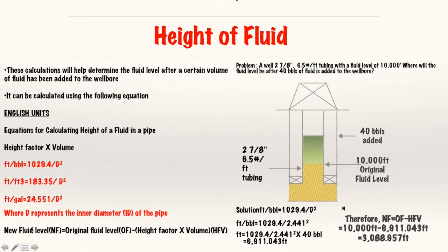So, the equation to, or the formula to take into consideration is new fluid level is equal to original fluid level minus the height factor times the volume, right? So, I'm going to subtract my original fluid level minus the height factor times the volume. That will give me the height that I need in order to calculate my new fluid level. So, I just have a basic example here, simple, straightforward, a well, 2 7/8 inches, 6.5 pound per foot tubing with a level at 10,000 feet. So, I basically, I pumped down some fluid, right? And it stopped here at 10,000 feet. I put my fluid here. Then, I'm asking, where would the fluid level be if I added 40 barrels of fluid to my well bore? So, I added 40 more barrels to my well bore, that's this green, this is my new fluid I pumped in. So, the question is, where is this level? Where is my new level?